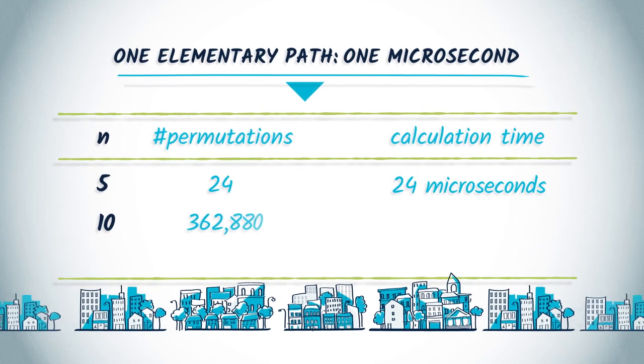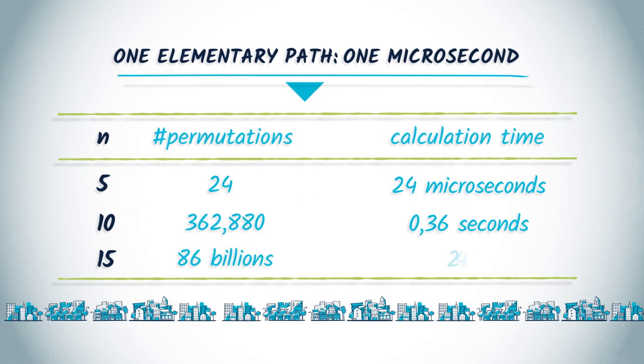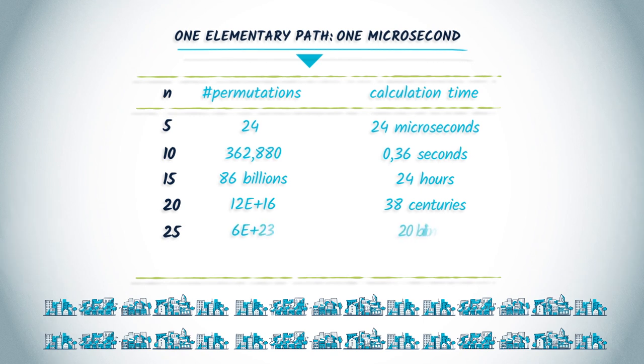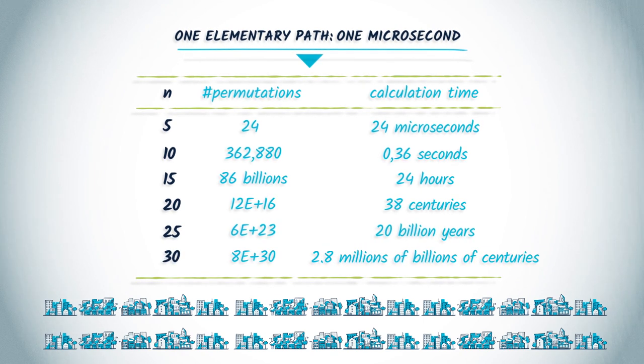Multiplying the number of cities by only 3 increases the resolution time to approximately 24 hours, and multiplying the number of cities by 10, thus increasing it to 30, will take around 3 millions of billions of centuries. So, it's quite obvious that this algorithm becomes impractical, even for only 20 cities.